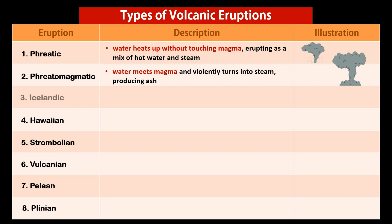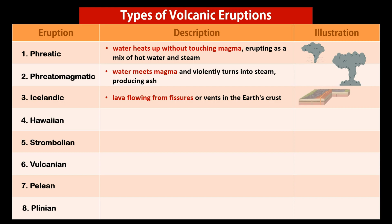Icelandic eruptions feature lava flowing from fissures or vents in the Earth's crust. Hawaiian eruptions eject large volumes of very hot, thin, runny lava from volcano vents.